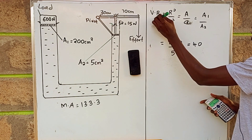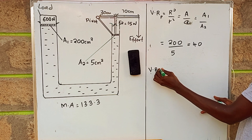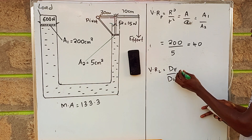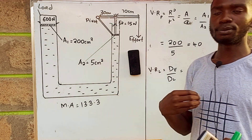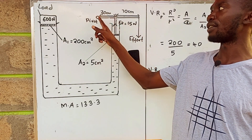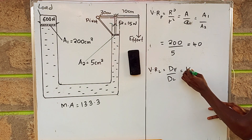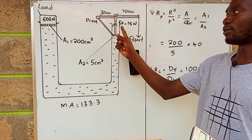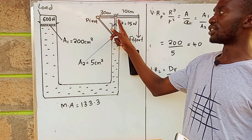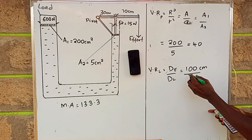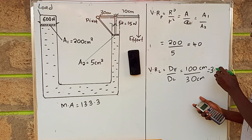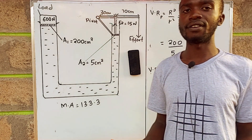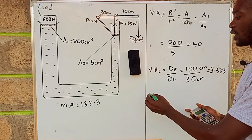Now the velocity ratio for the lever equals the distance moved by the effort over the distance moved by the load. The effort distance from the pivot is 100 centimeters, divided by the load distance from the pivot which is 30 centimeters, giving a velocity ratio of 3.333 for the lever.